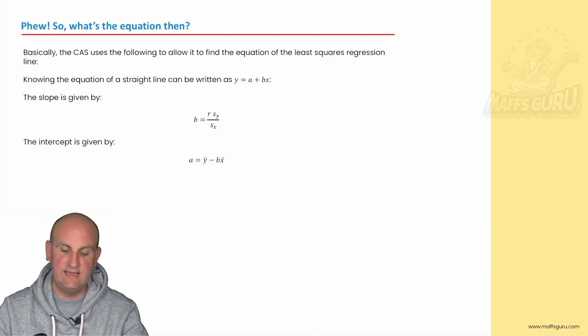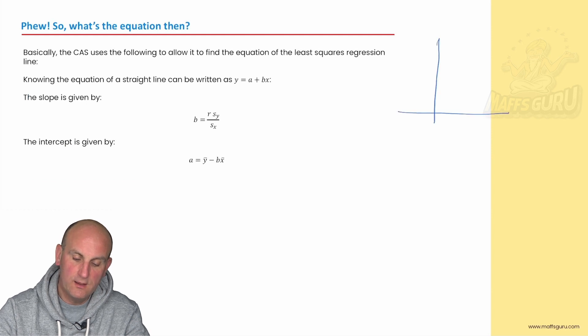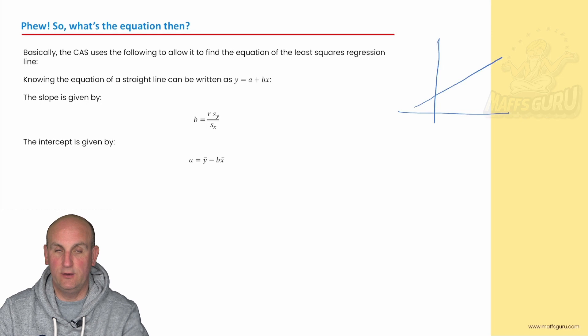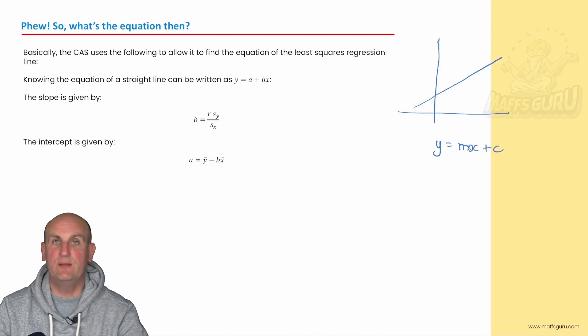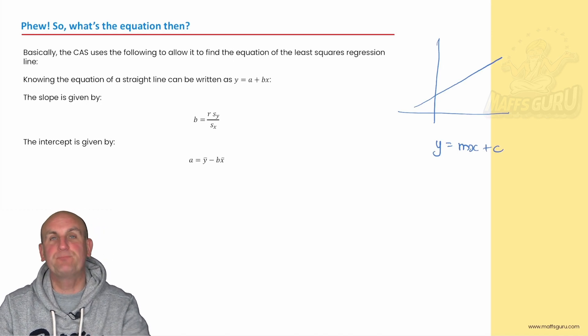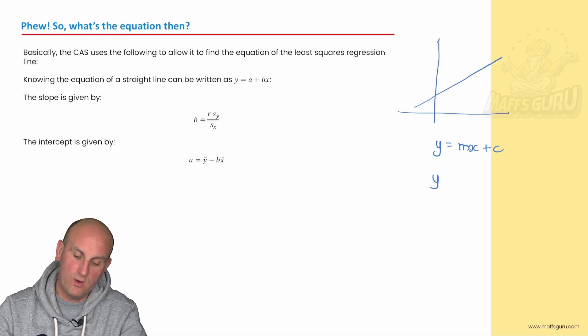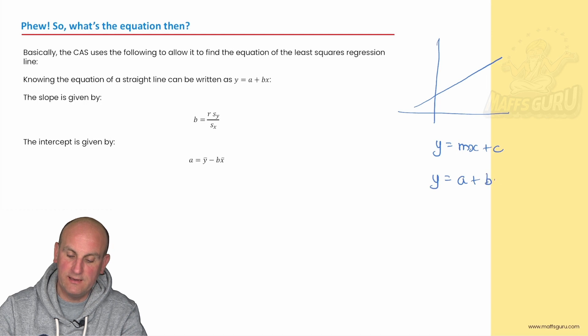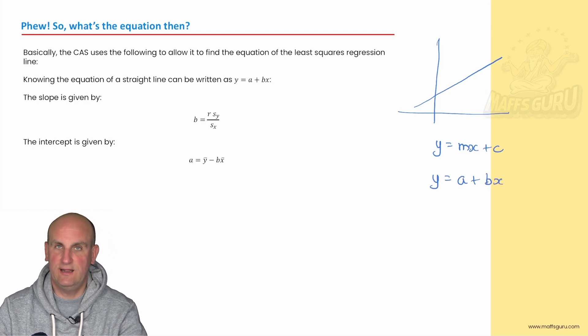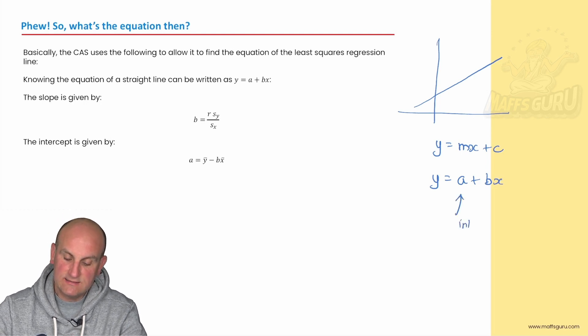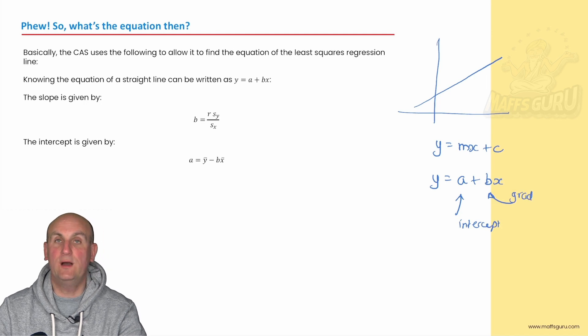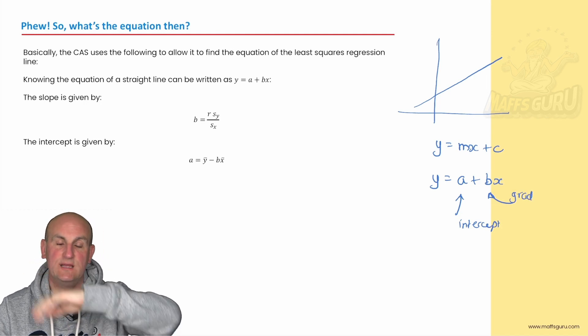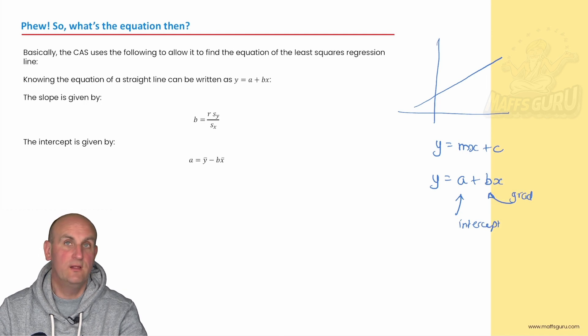What becomes important is a straight line. Remember, a least squares regression line is a straight line, and all straight lines have the equation y equals mx plus c. We've done that before. But for some random reason in general math, we don't do that. We actually have the line given as y equals a plus bx. All we've done is swap things around and use different letters. a in this situation is the intercept and b is the gradient of the line. If you understand straight lines, there is always an intercept, there is always a gradient. And if we can find out those, then life is good.